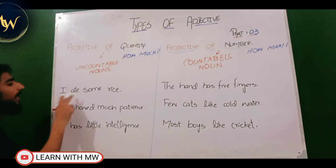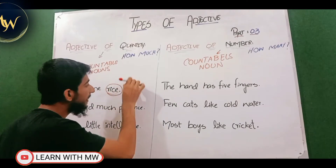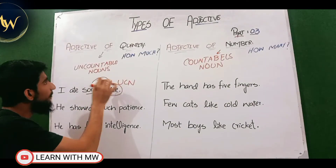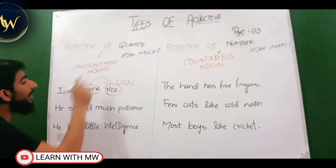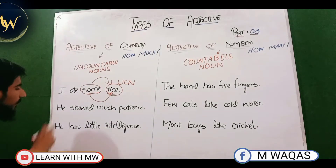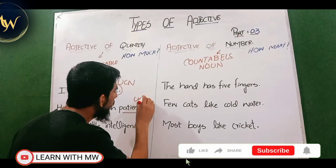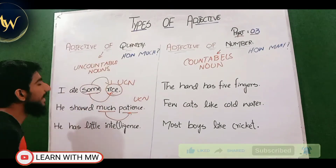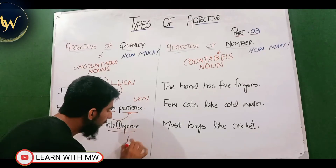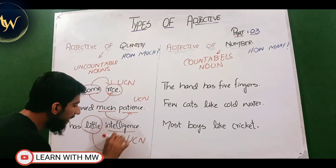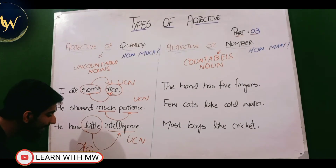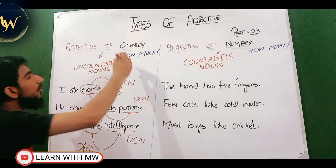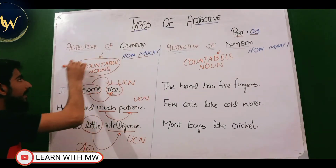Three examples to illustrate. First: 'I ate some rice.' Rice is a noun, but it is an uncountable noun because we cannot count rice. Some answers the question how much, so some is basically adjective of quantity because it comes with an uncountable noun. Second: 'He showed much patience.' Patience is also an uncountable noun, and much adds meaning to patience, so much is adjective of quantity. Third: 'He has little intelligence.' Intelligence is also an uncountable noun, and little adds meaning to it, so little is adjective of quantity. Adjective of quantity answers how much and comes with uncountable nouns.